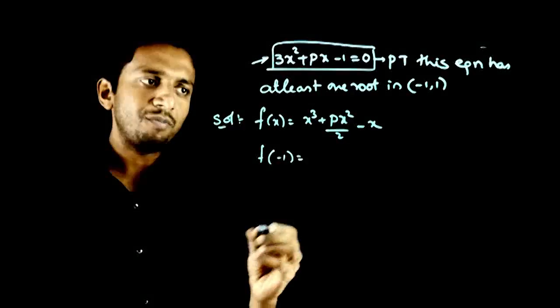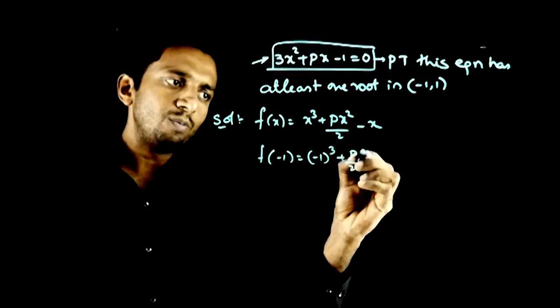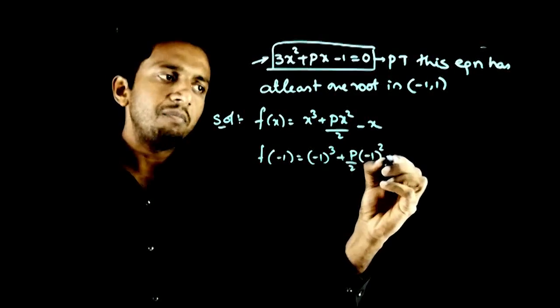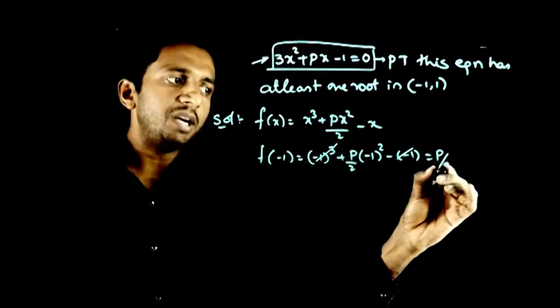What will f(-1) be? f(-1) is (-1)³ + (p/2)×(-1)² - (-1). These cancel out, that equals p/2.